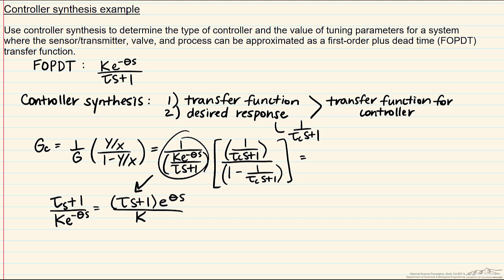What this means is that the controller would have a negative dead time, because the functional form of dead time is e^(-θs). It is physically impossible for this to happen — you cannot have a negative dead time. Therefore the controller is impossible: we now have a physically unrealizable controller.